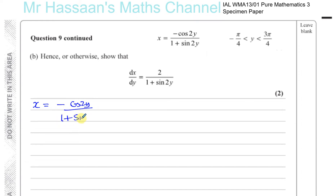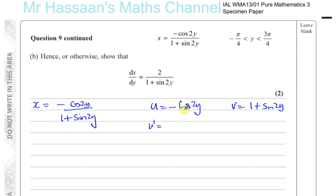So here we have U equals minus cosine 2y and V equals 1 plus sine of 2y. U dash with respect to y: if you differentiate cosine you get minus sine, so you're going to get minus minus which is plus, giving sine 2y, multiplied by 2 because of the chain rule. So U dash equals 2 sine 2y. And if you differentiate V with respect to y, the differential of sine is cosine of the same thing, multiplied by 2 because the differential of 2y with respect to y is 2.